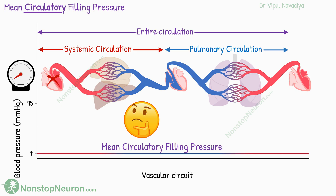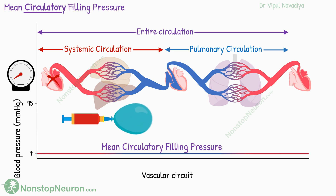You might ask: if the heart has stopped pumping, where does this 7 mmHg pressure come from? Well, it's due to the filling of the blood vessels. Just like how filling the air inside a balloon increases the pressure inside it, filling of vessels by blood also generates pressure. In short, the mean pressure in circulation due to mere filling of the blood vessels is called mean circulatory filling pressure.